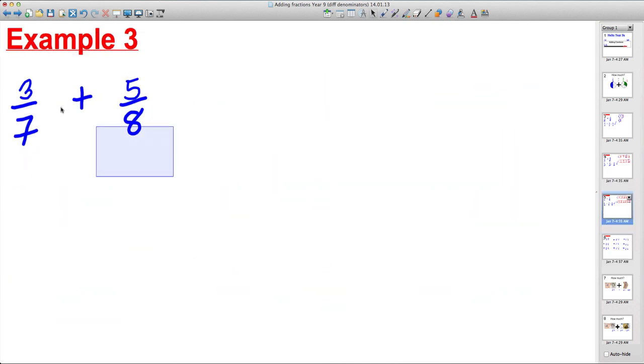Last example. 3 sevenths plus 5 eighths. Do the same thing here. We'd write our 3 sevenths for this one and we'd write our 5 eighths for this one.